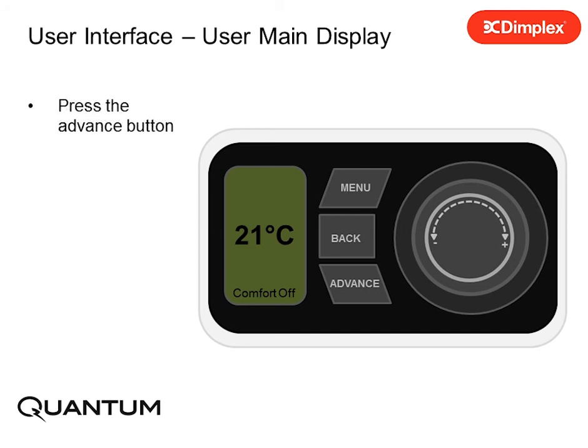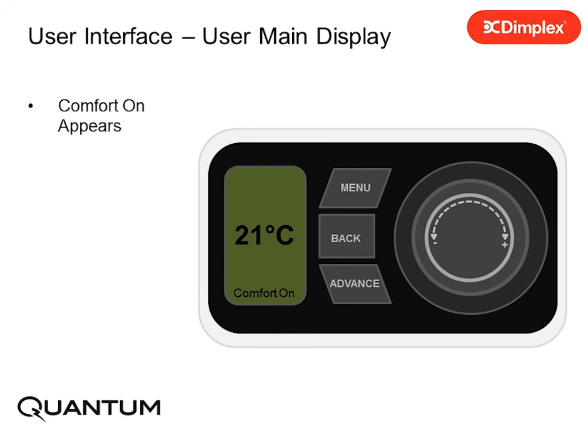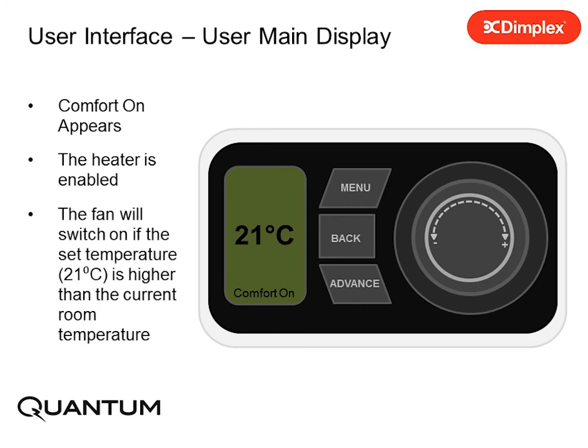Press the Advance button. The comfort state changes. Comfort is on. The fan will switch on if the current room temperature is lower than 21 degrees centigrade.